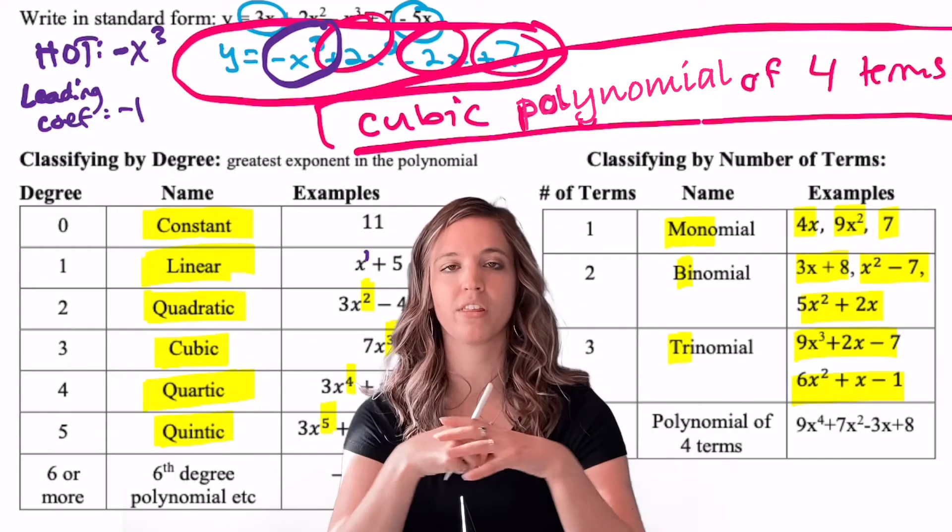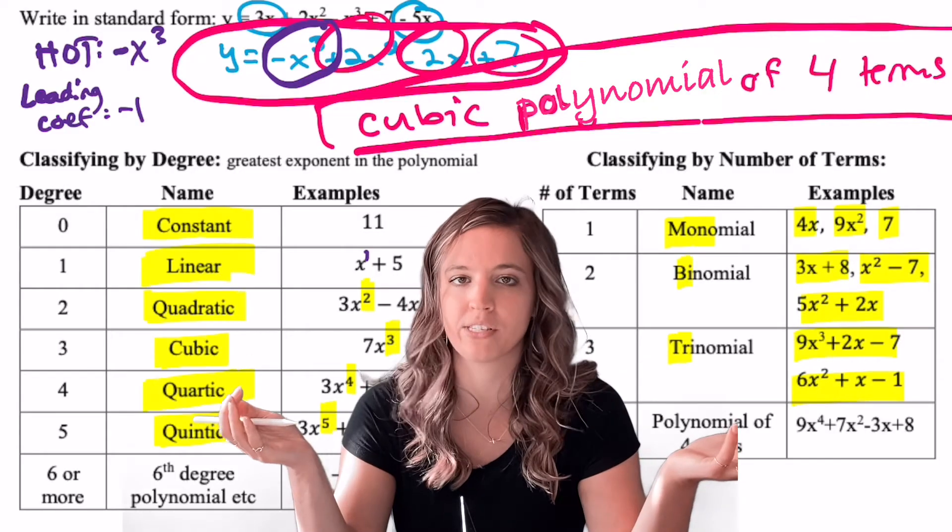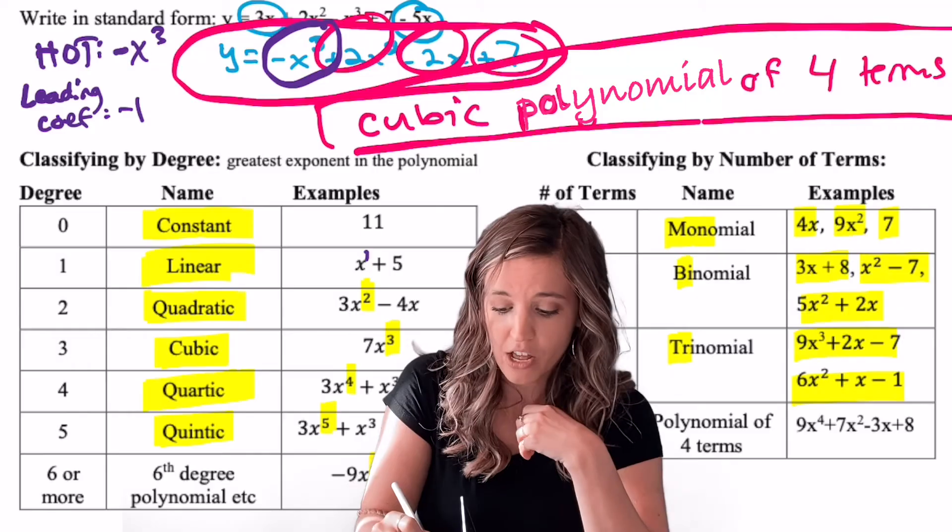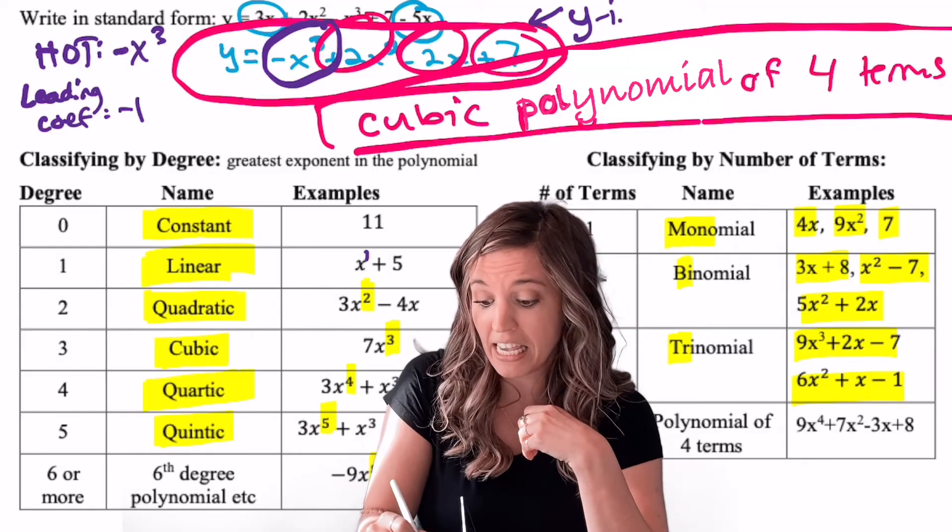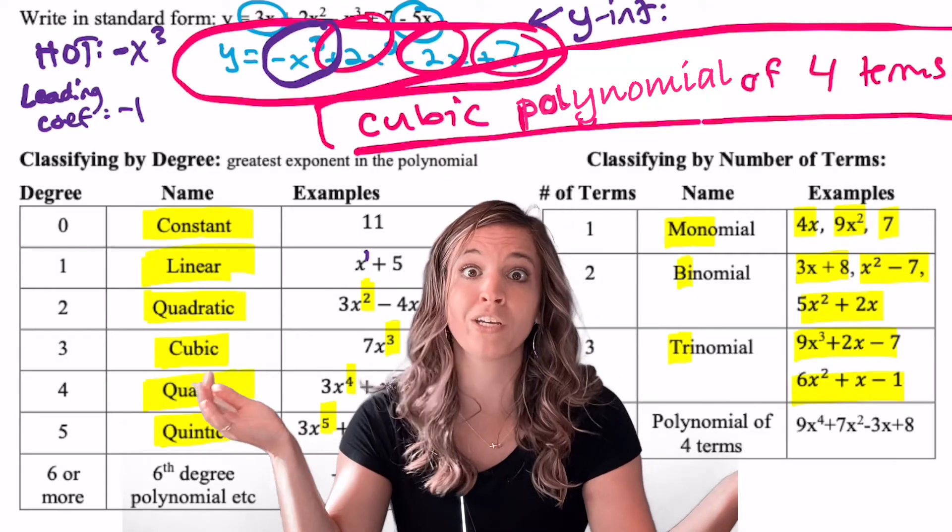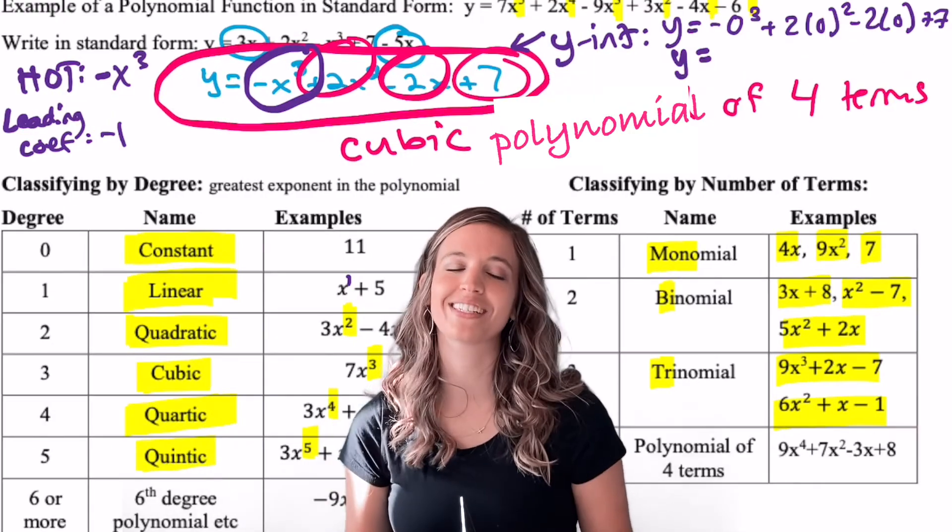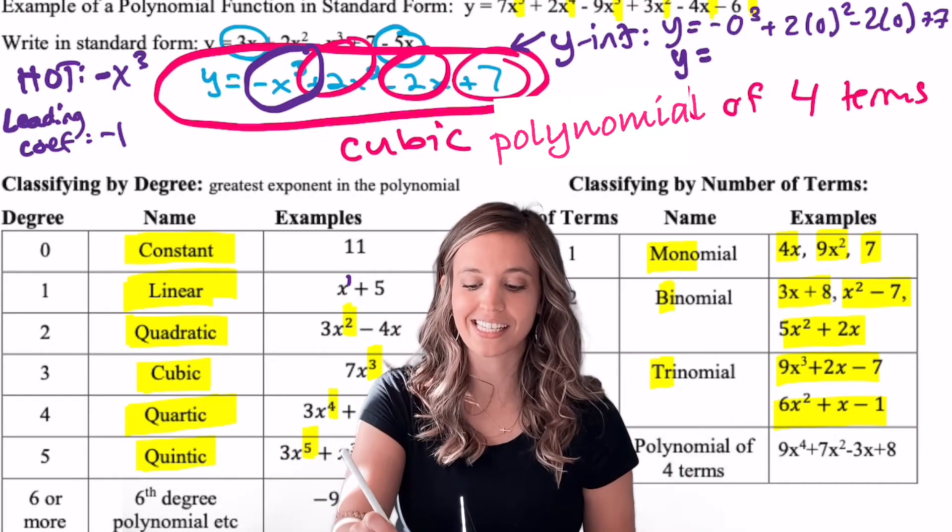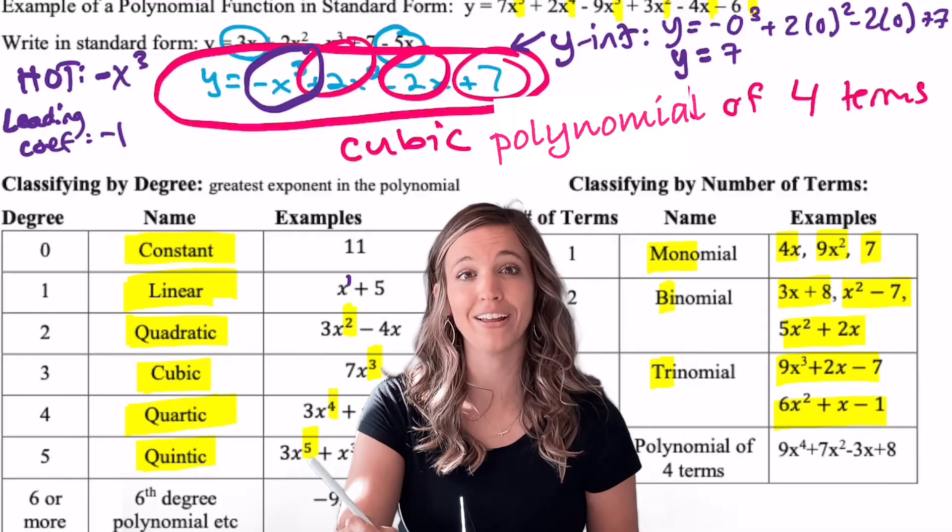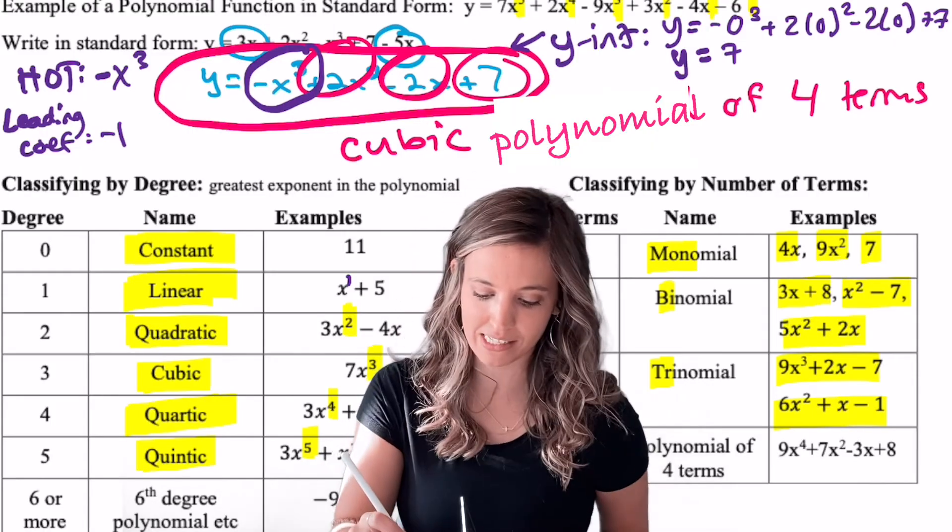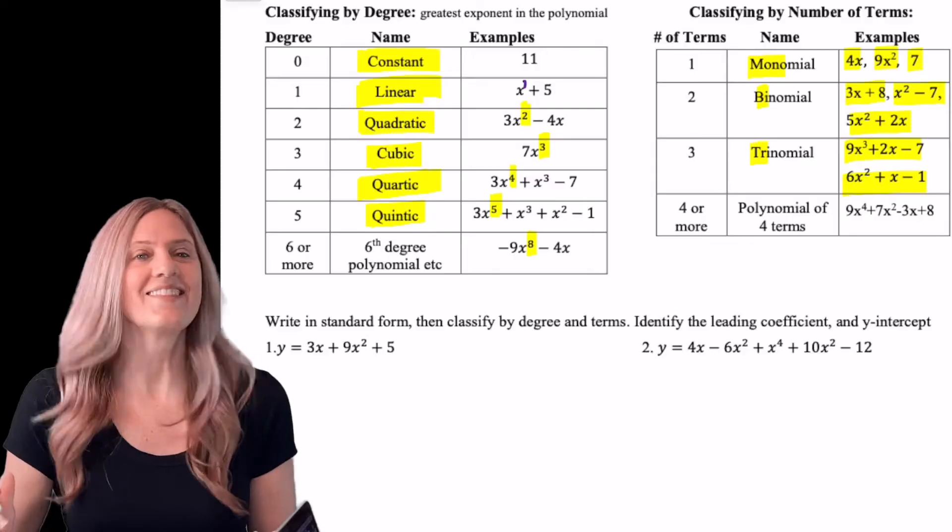Let's find one more thing from our standard form. What about the y-intercept? To find the y-intercept for any given problem, we can just plug in zero. If I plug in zero for x here, I get y equals seven. Make sure we write a y-intercept as a coordinate, because it's a point: (0, 7).